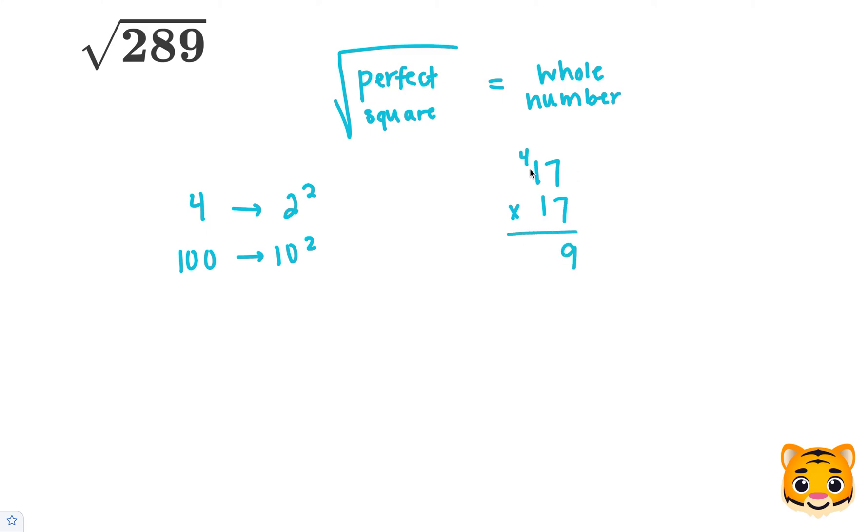7 times 7 is 49 carry the 4, 1 times 7 is 7, plus 4 is 11. Add our 0, 1 times 7 is 7, and then 1 times 1 is 1. When we add these together we get 289.